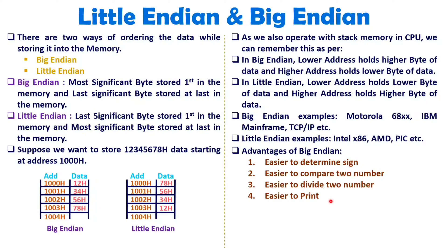It is also easier to print with Big Endian. The reason is we are printing data serially, so the first data in memory is the first data to print. As data comes in order — first data, then second data — printing will be easier. Printing is not as efficient if you start from the last byte, because in printing you want to print the first data first and the last data at last.